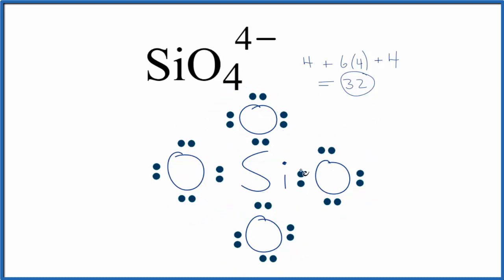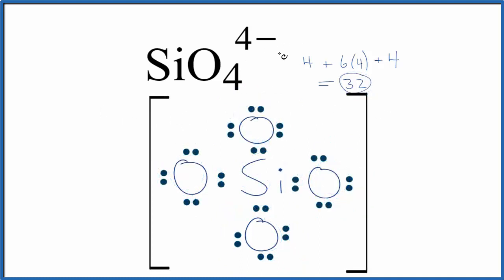Since it is an ion, we do need to put brackets around it. And then we can put a four minus out here to show the charge on the ion.